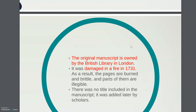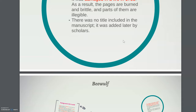The original manuscript is owned by the British Library in London. It was damaged in a fire in 1731, and as a result a lot of the pages are burned and brittle — there are parts that can no longer be read. But you can still view it under protected glass at the British Library. There was no title included in the original manuscript; it was later added by scholars. There's no author either, so there's a lot of mystery with Beowulf.